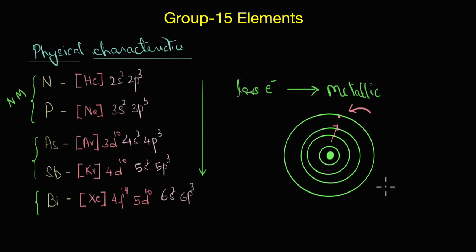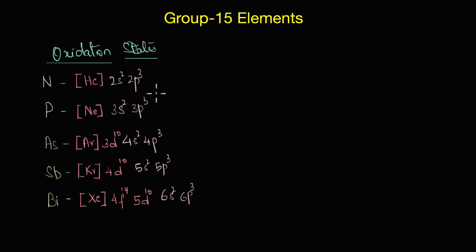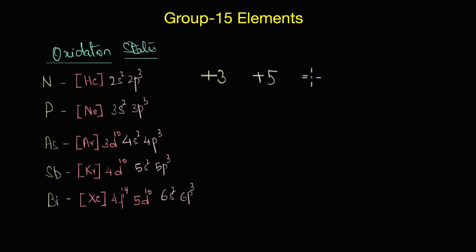Now let's look at the oxidation state. Group 15 elements have five valence electrons, and the most common oxidation states they show are +3, +5, and −3.